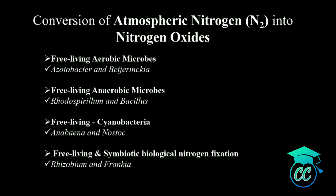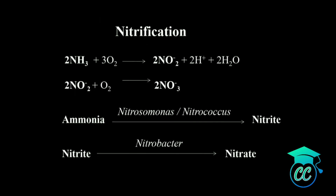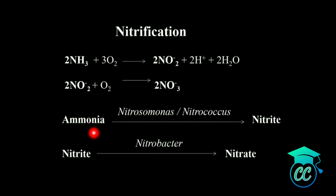Now let's look at the microorganisms taking part in nitrification. Here, ammonia is firstly oxidized to nitrite with the help of microorganisms such as Nitrosomonas and Nitrococcus. Then nitrite is oxidized to nitrate with the help of microorganisms such as Nitrobacter. These are the microorganisms taking part in nitrification.